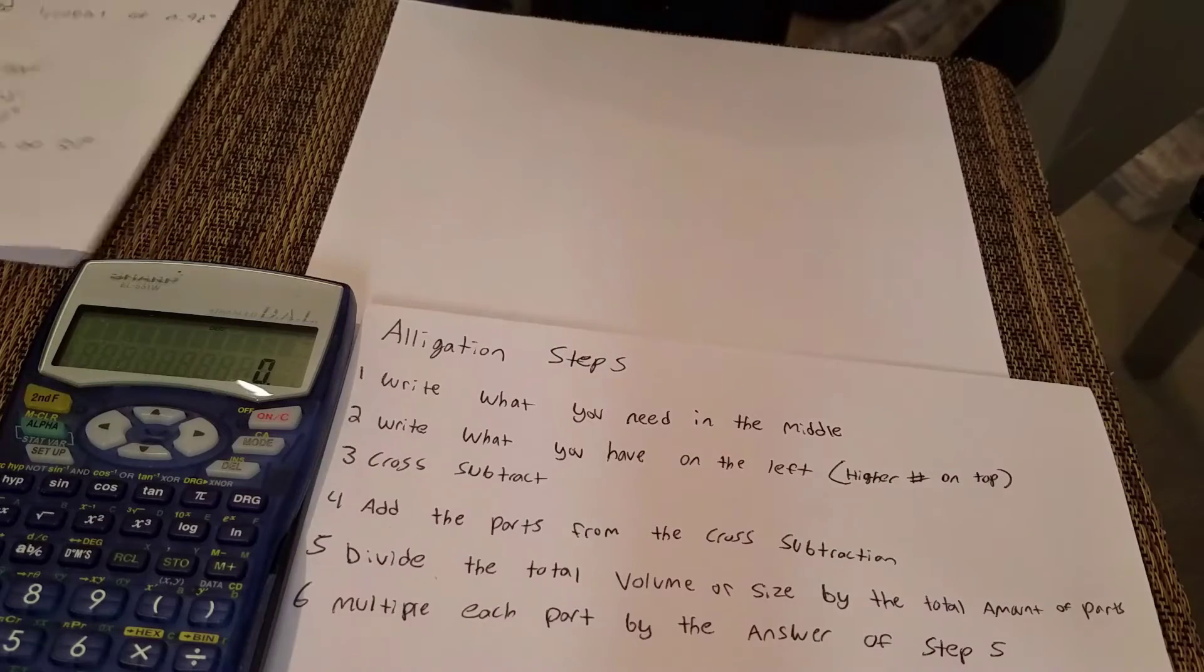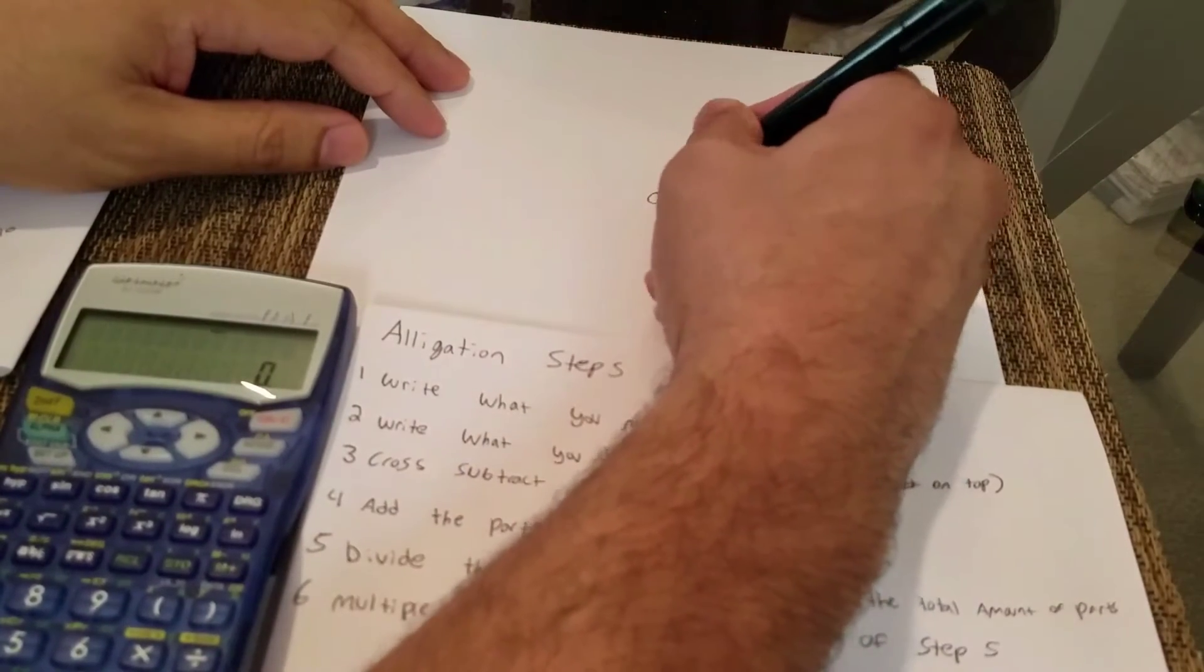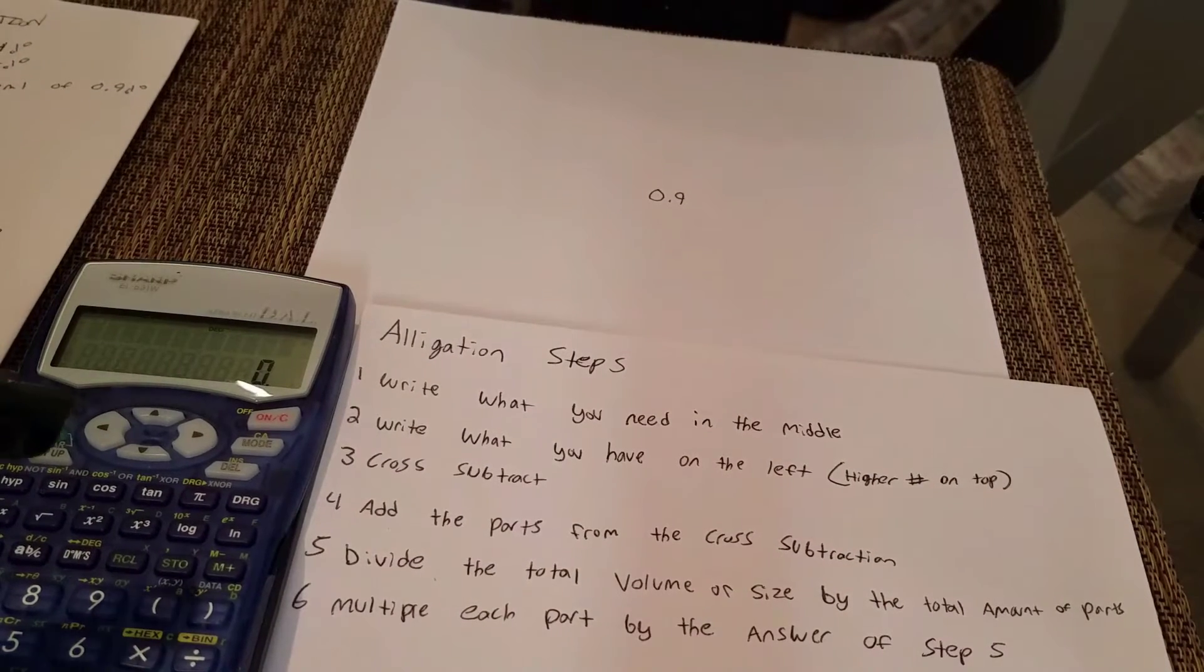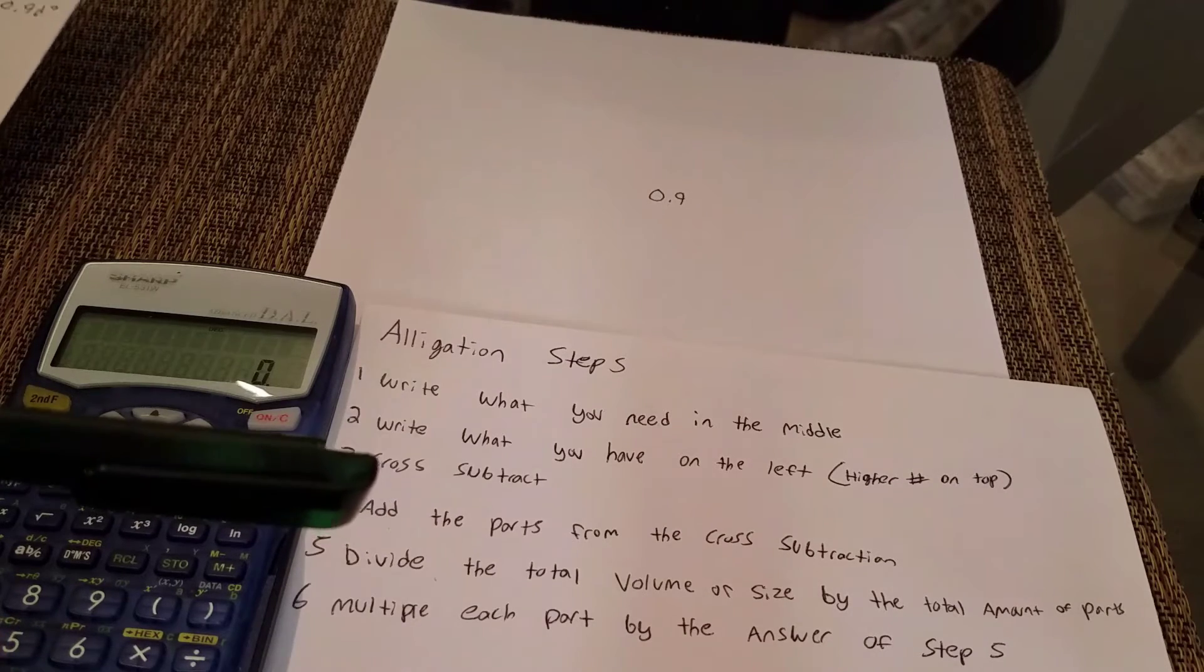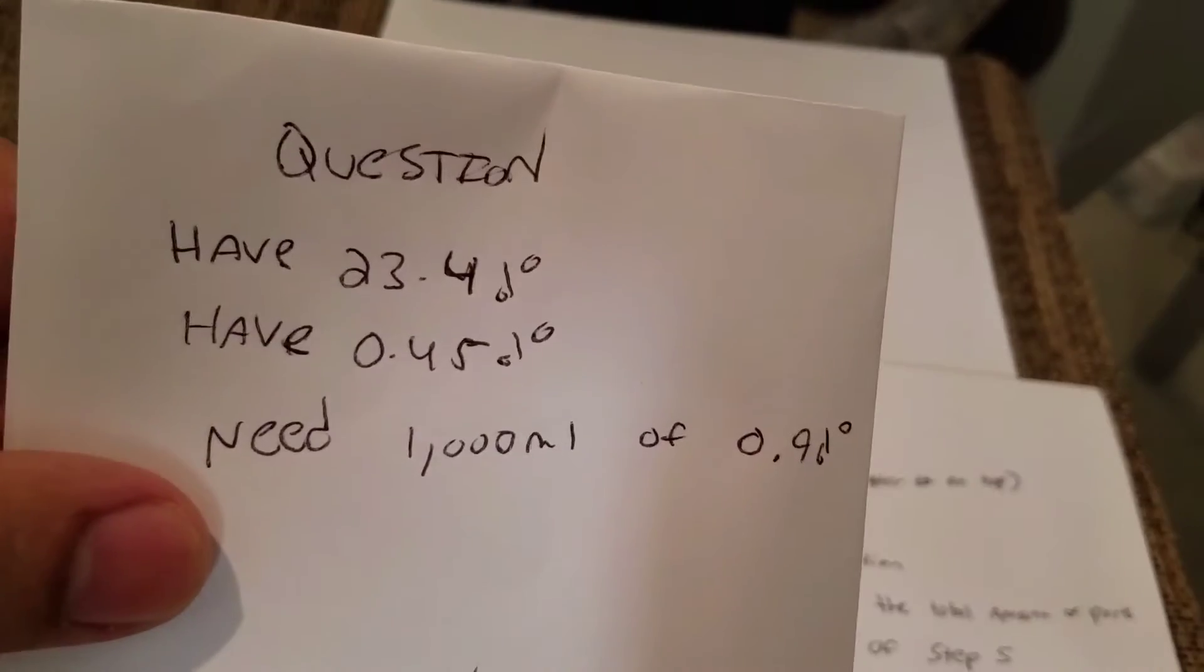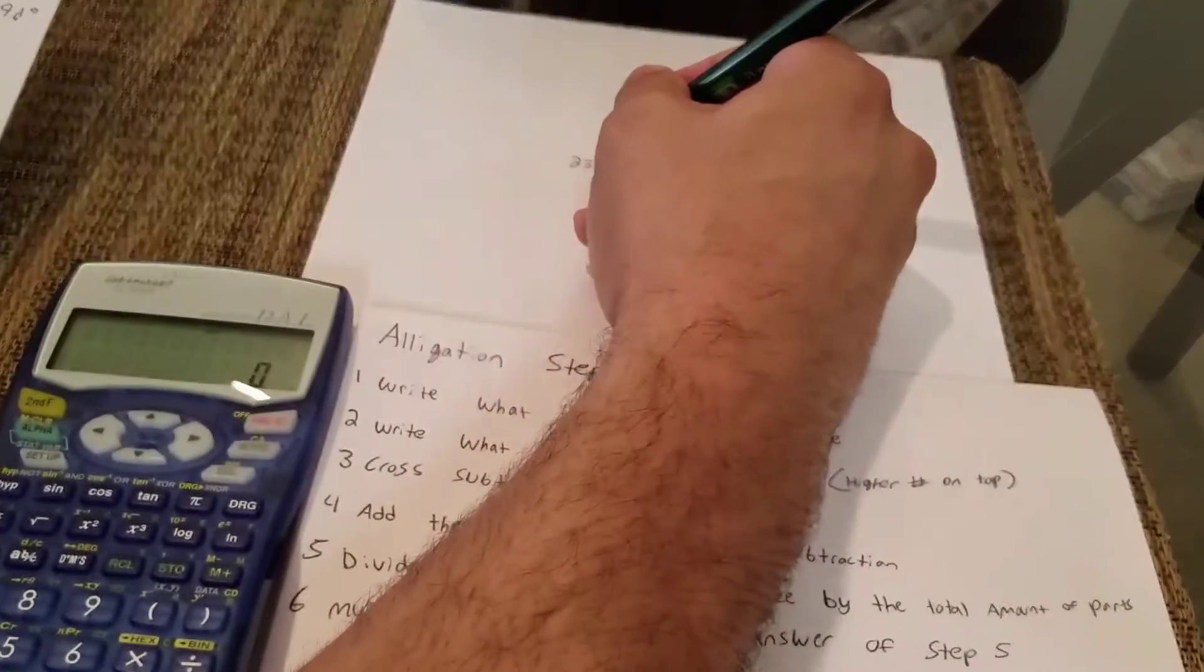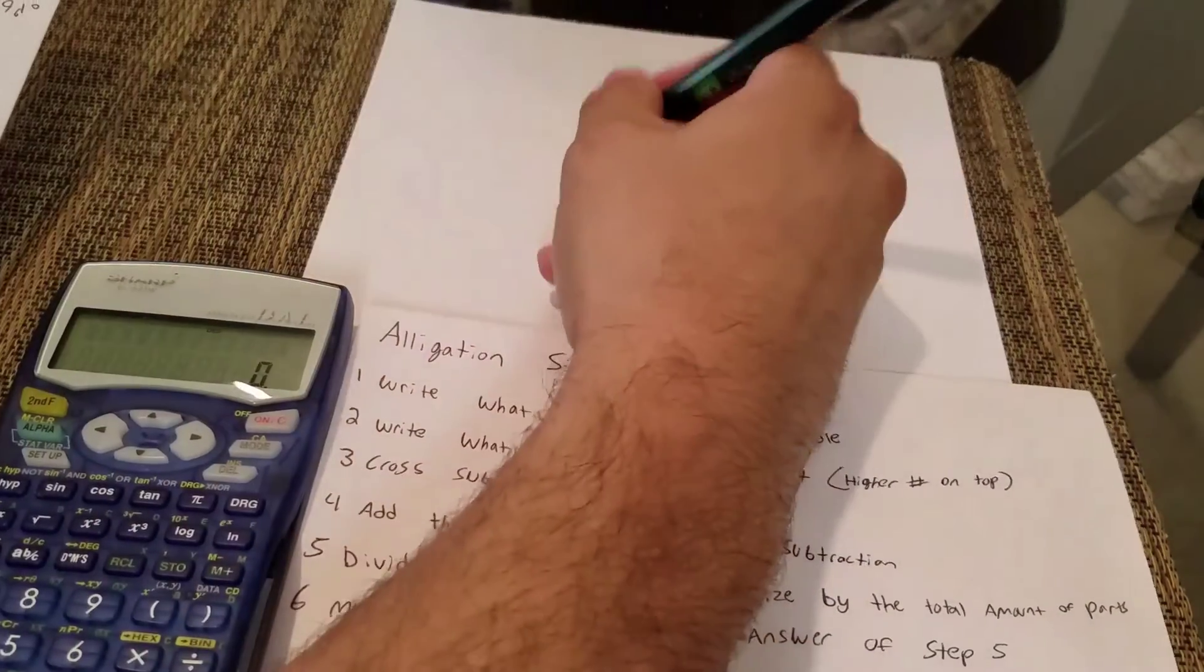If you follow my steps here, the first step is write what you need in the middle. So what I need is normal saline, so I'm gonna write 0.9. The second step says write what you have on the left with the higher number on top. This is very important. So what I have is 23.4 and half saline, so I'm gonna make sure I write 23.4 up top, and then under that I'm gonna write 0.45 for half saline.